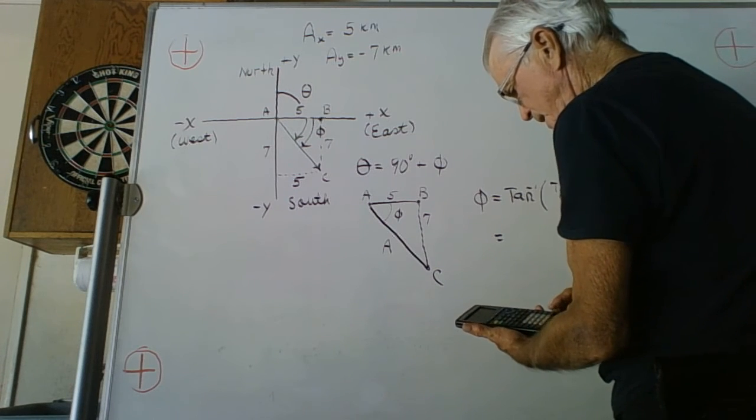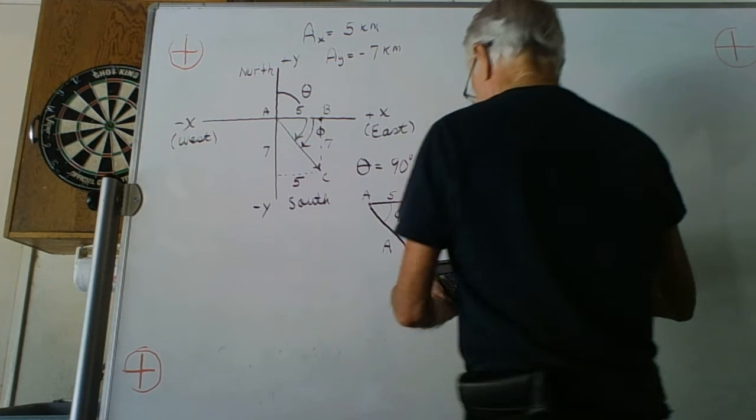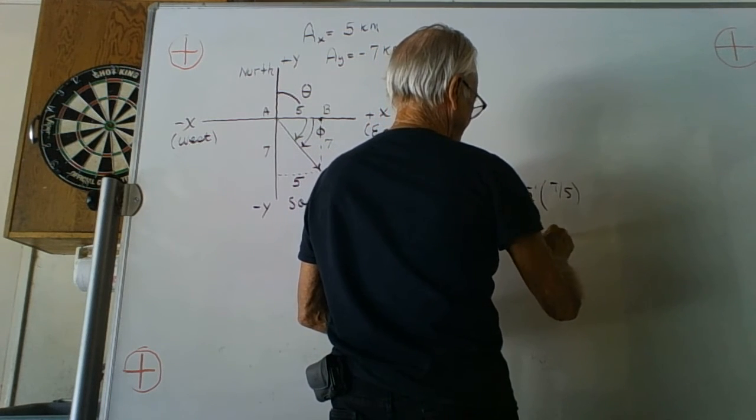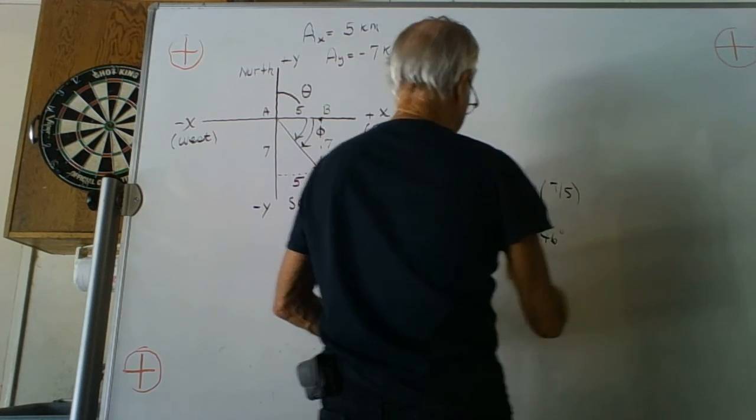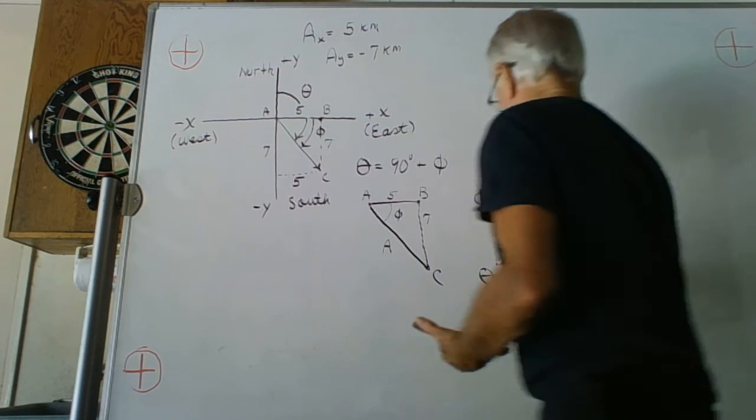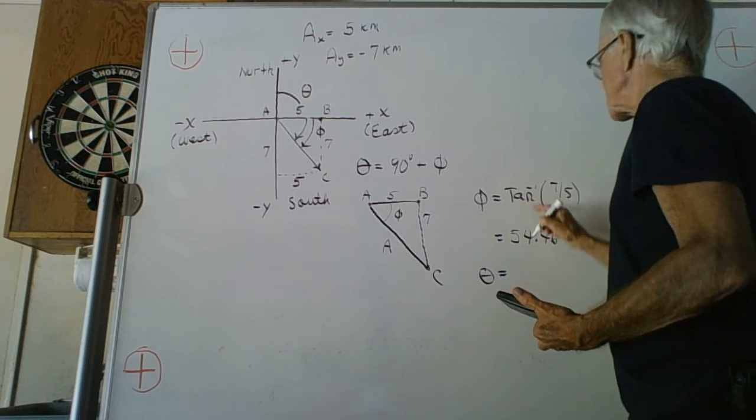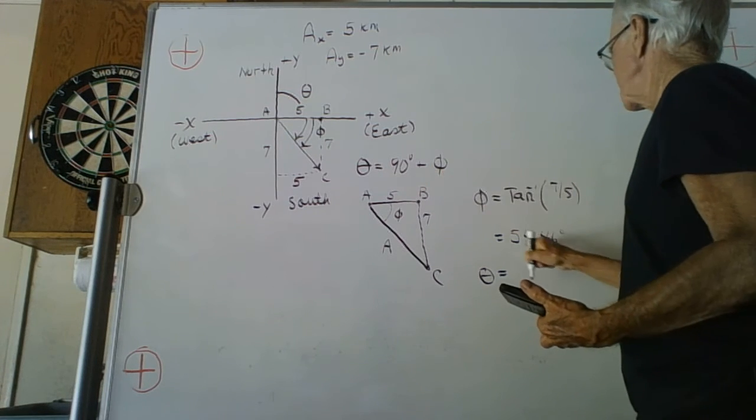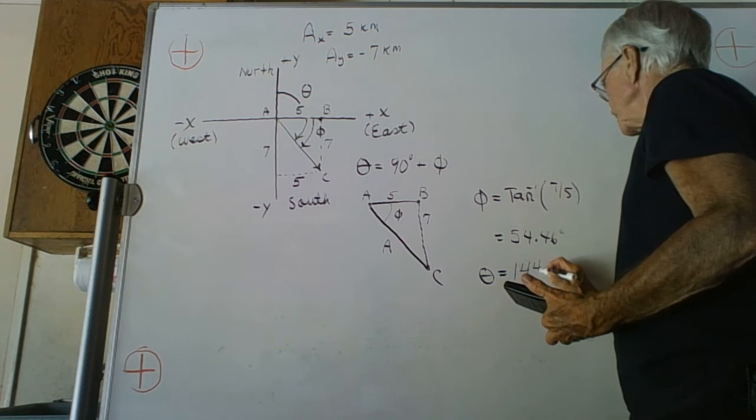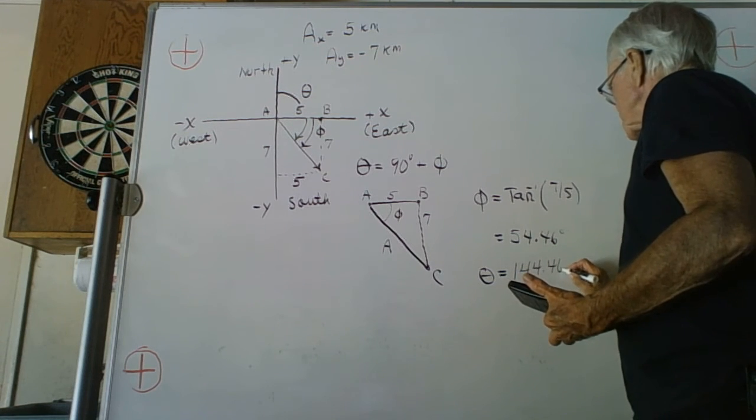I get 54.46 degrees. That gives the angle we're looking for, which is the heading theta, as a sum of 90 plus 54.46, giving us 144.46 degrees.